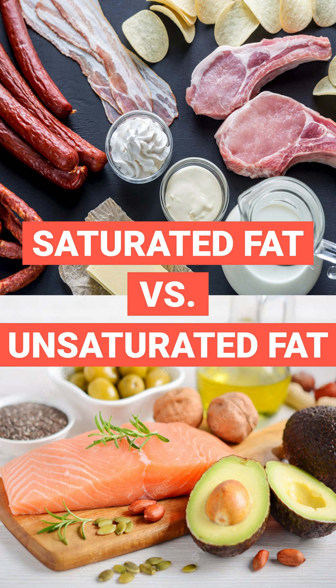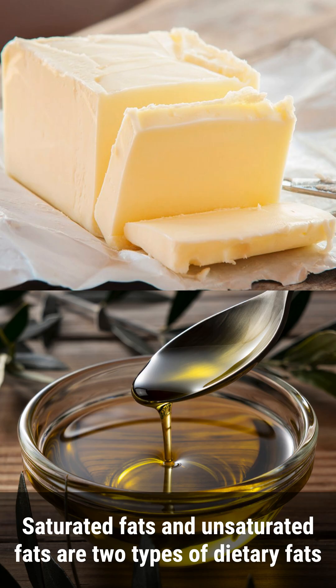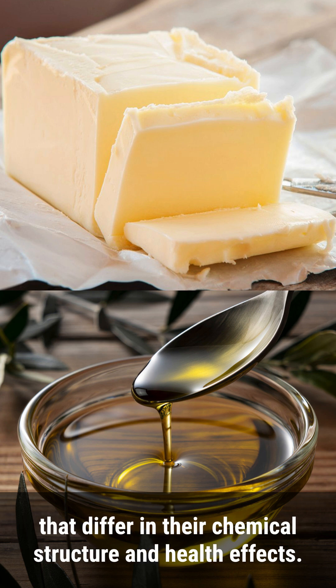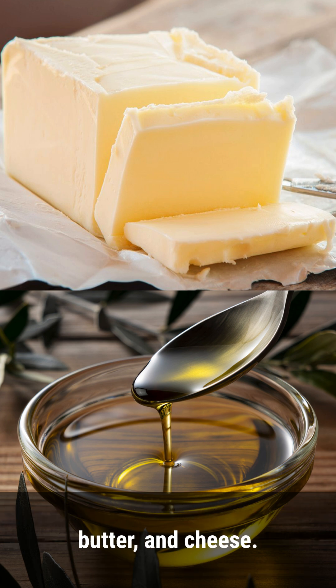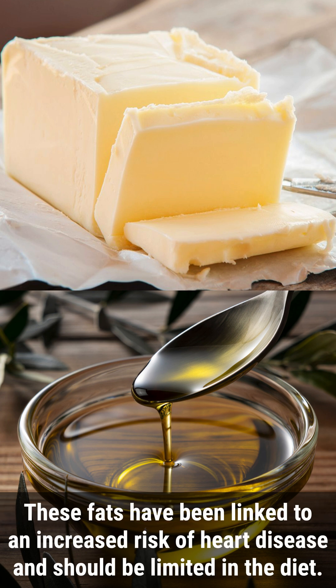Saturated fat versus unsaturated fat. Saturated fats and unsaturated fats are two types of dietary fats that differ in their chemical structure and health effects. Saturated fats are typically solid at room temperature and are found in animal products such as meat, butter, and cheese. These fats have been linked to an increased risk of heart disease and should be limited in the diet.